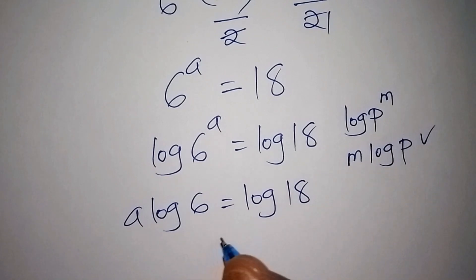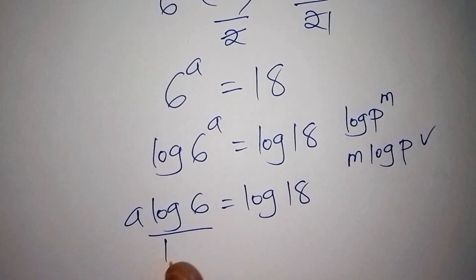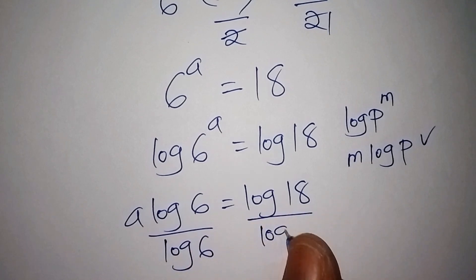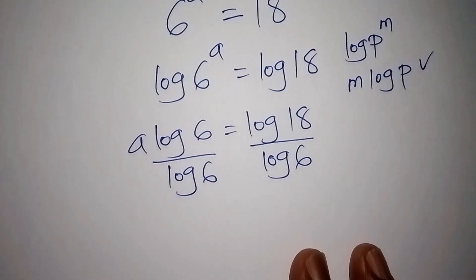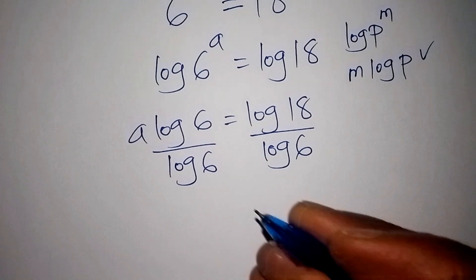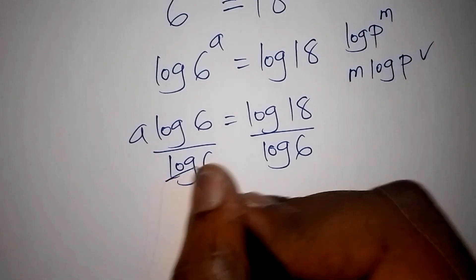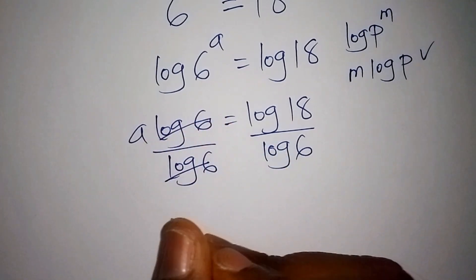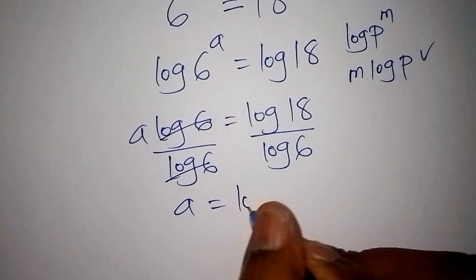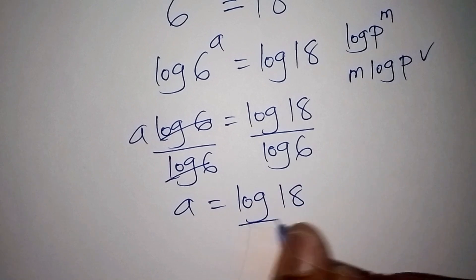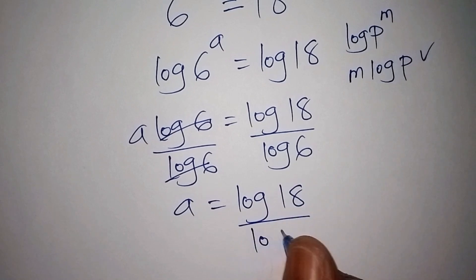We shall now divide both sides by the log of 6. Log 6 and log 6 cancel, so a is equal to the log of 18 all over the log of 6.